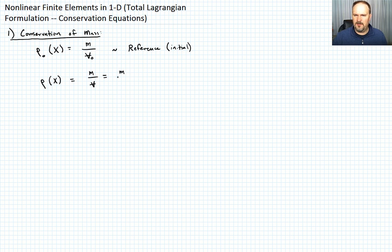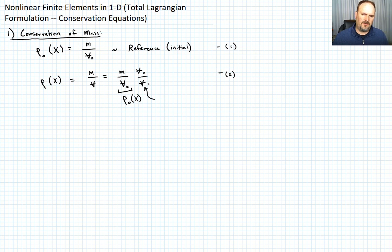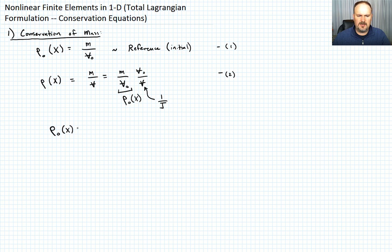We can use a chain rule and say M over V must be M over V₀ times V₀ over V. This gives the same thing. This first ratio is ρ₀ evaluated at X — call that equation 1, call this equation 2. The ratio of volumes V₀ over V is what the Jacobian is telling you. Since this has the current volume in the denominator, this is actually 1 over J. So ρ₀(X) = J · ρ(X). Call that equation 3.